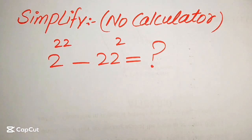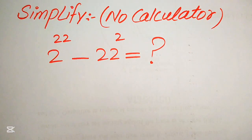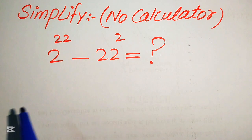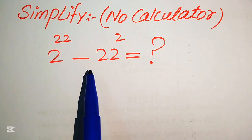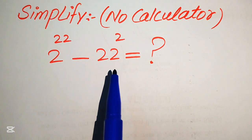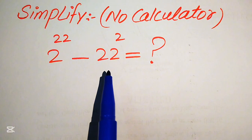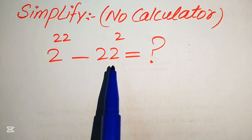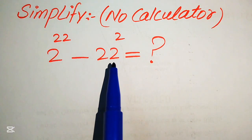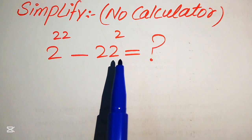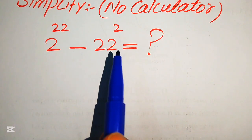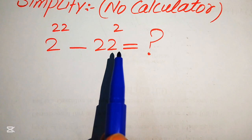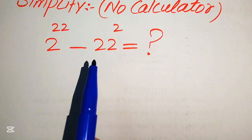Hello everyone. How to simplify this nice algebraic expression? So if we have 2 to the power of 22 minus 22 to the power of 2, we write this algebraic expression into simplified form, and here a calculator is not allowed. It means that we will show all of the working on paper or in our mind. We can do this in a very smart way.